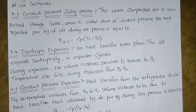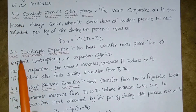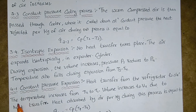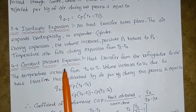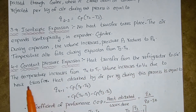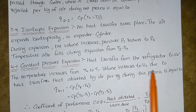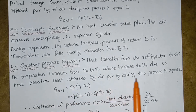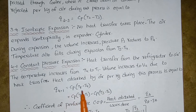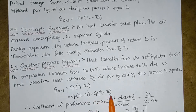So all these steps you have to explain one after the other: 1 to 2, 2 to 3, 3 to 4. Now process 4 to 1 — constant pressure expansion. Heat transfers from the refrigerator to the air. The temperature increases from T4 to T1. Volume increases to V4 due to the heat transfer. Heat absorbed by air per kg during this process is equal to Q(4→1) = Cp × (T1 − T4). So we can write: Cp × (T4 − T1) minus Cp × (T3 − T2).